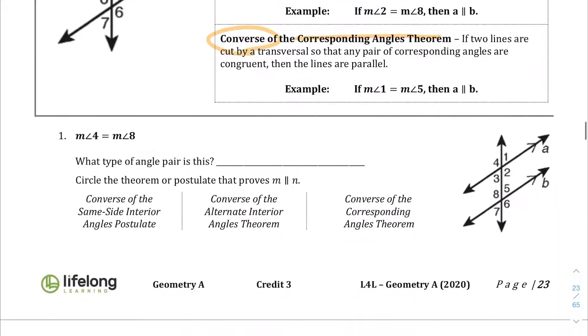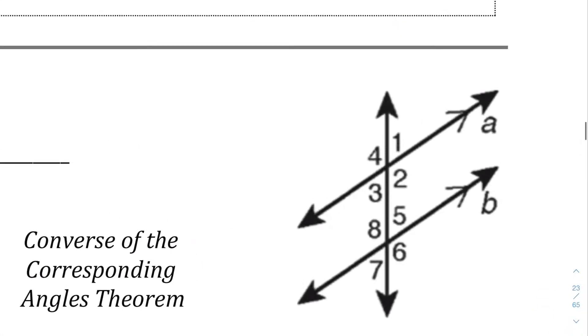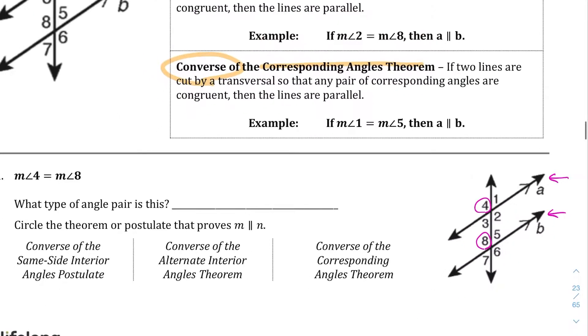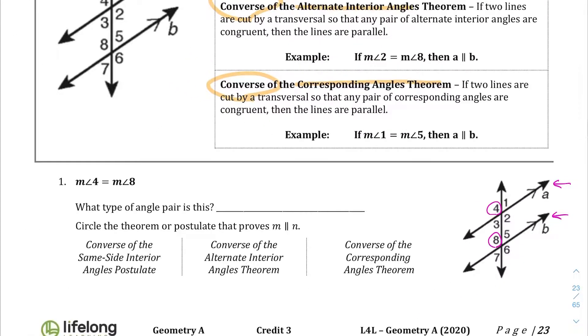So here we have an example where you're told that the measure of angle four is congruent or equal to the measure of angle eight. So if we zoom in here, four and eight. And if we're told that they are equal, well, they are corresponding angles and corresponding angles are equal when the two lines are parallel and only when they are parallel. If they weren't parallel, this would not be a true statement. So what type of angle pair is this? Well, they are corresponding angles.